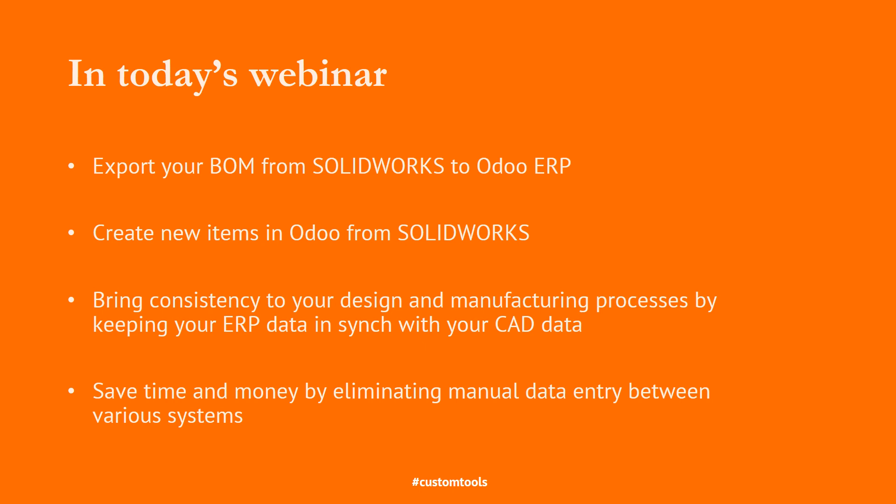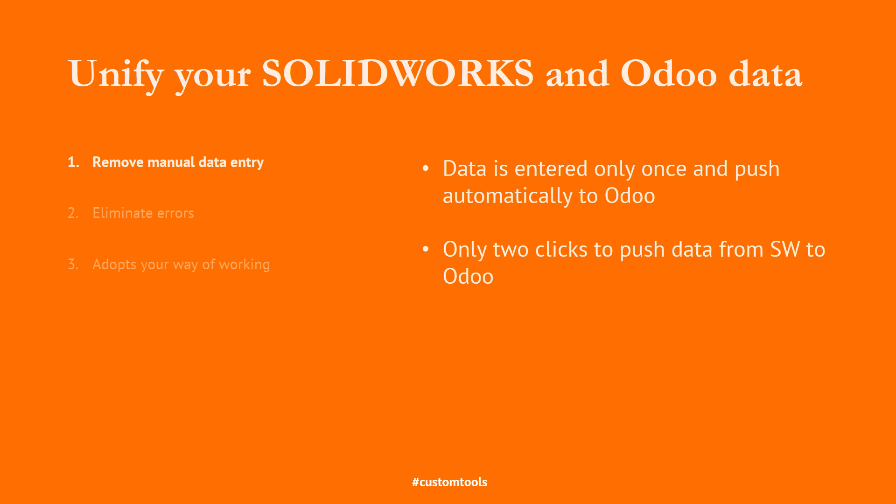Data quality and consistency are critical. When dealing with an integration, companies are often seeking to save time and money by automating BOM and item creation, but data consistency is as important as time and money savings. Our approach is that you should not perform the same task twice. Data are entered in SolidWorks and pushed automatically to Odoo. It only takes a couple of clicks to create a bill of material and items in Odoo, whether your SolidWorks assembly consists of hundreds or thousands of parts. Our integration allows you to move your project faster from engineering to purchasing and production, turning days of manual work into minutes.